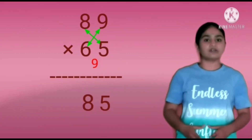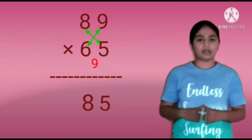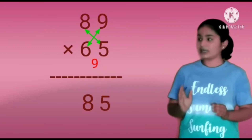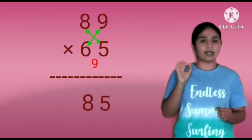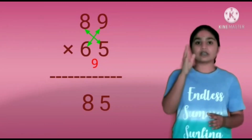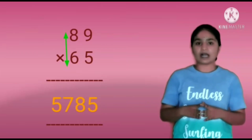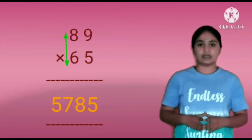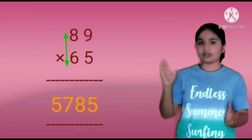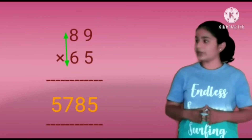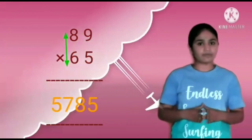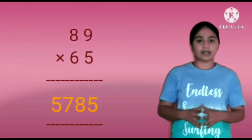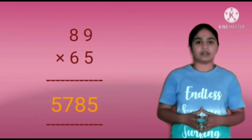Add these both numbers, we will get 94. And there is carry left over. So, add the carry to 94. The answer will be 98. Write the 8 in the 10th place and keep the 9 as carry. Next, multiply the last digits: 8 into 6 equals 48. Add the carry to it, it will be 57. So, write 57 before the number 85. The answer will be 5785.